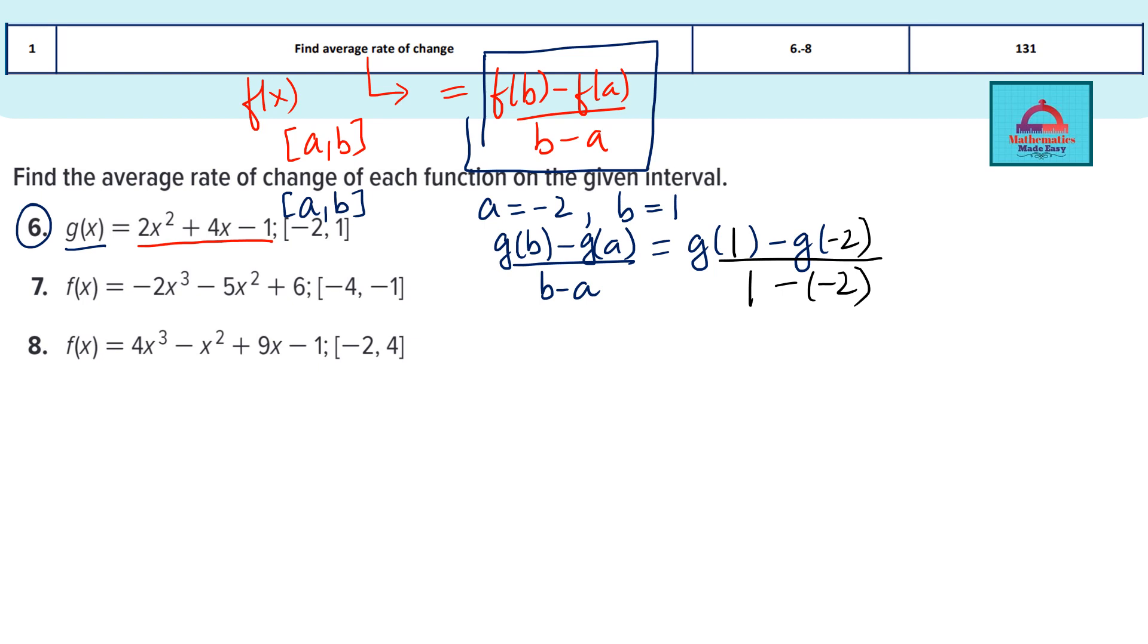Now we need to calculate g(1) and g(-2). So how do we calculate that? By using the given function. So the given function is this. So I will write here g(b) which is g(1) will be equal to, wherever there is x, you replace the value 1. So you are calculating the function value at the point 1. So 2 multiplied with 1 square plus 4 multiplied with 1 minus 1. When you simplify this, this whole value is going to come out to be 5. You may use your calculator to simplify the calculation. Now you calculate g(a) which is g(-2). That means you are replacing x now with -2 substitution. So there is going to be 2 multiplied with (-2) whole square plus 4 multiplied with -2 minus 1. And when you simplify this, this comes out to be -1.